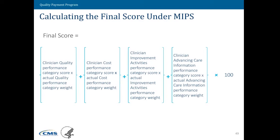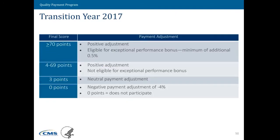Moving to slide 50, I want to spend a little time talking about these points. In this first year for Pick Your Pace, we have set it so that if you get 3 out of 100 points for your total score, you can avoid a negative payment adjustment. That means if you report a quality measure, an improvement activity, or the base score for Advancing Care Information, you will get at least 3 points and receive a neutral adjustment. The only way you get a negative 4% payment adjustment is if you don't participate and get 0 points. This policy was implemented for the first year so people can get used to the MIPS program, the scoring, and how all the pieces fit together.